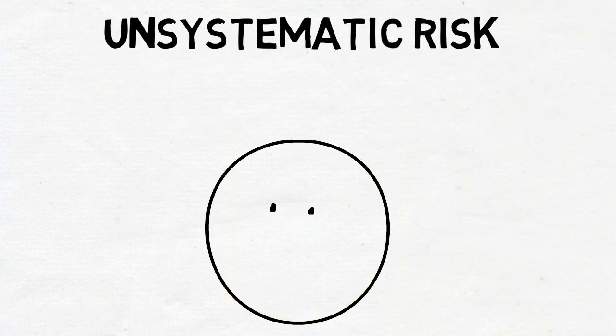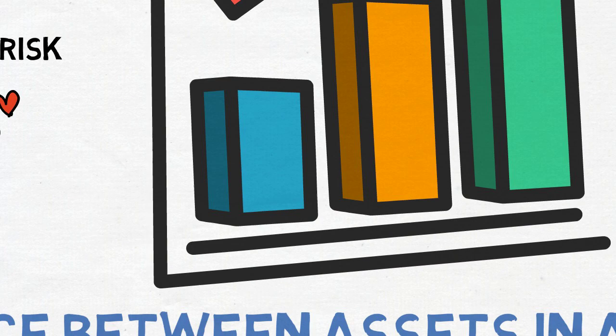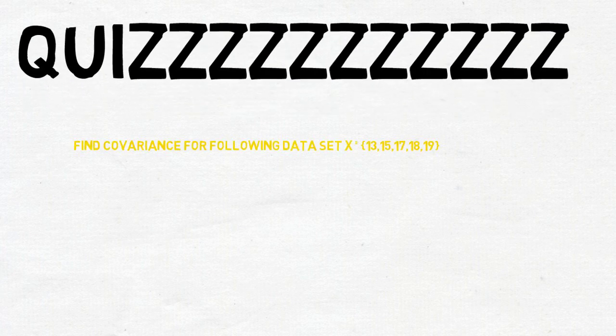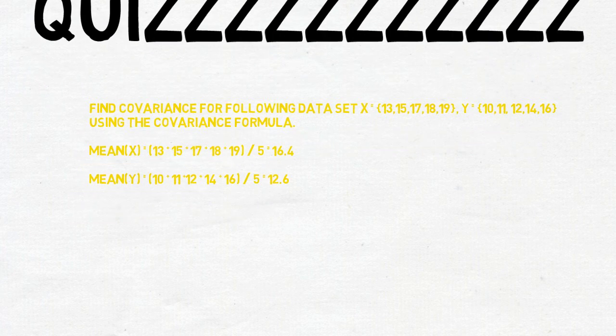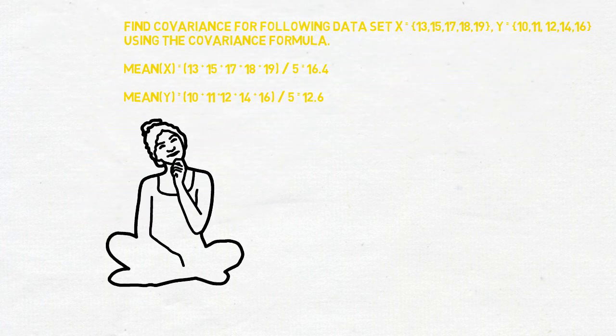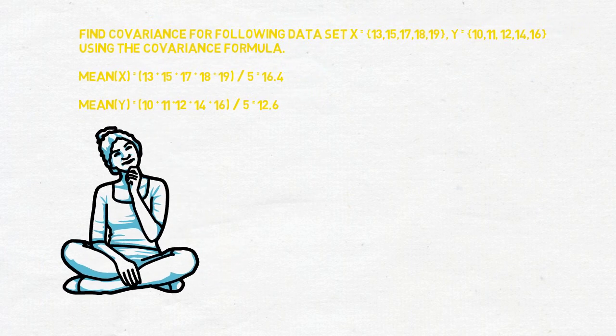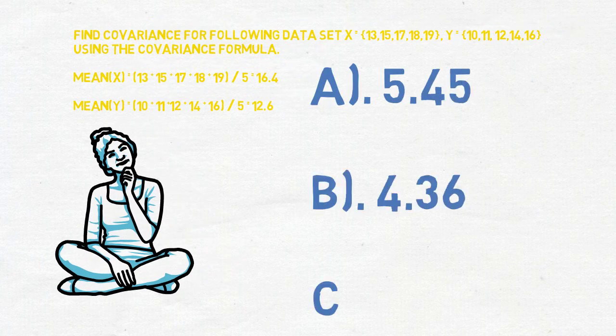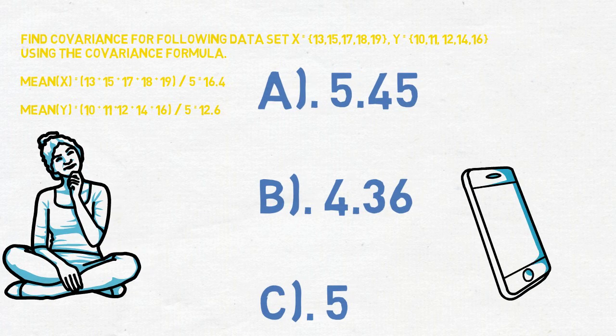I think now you got a clear idea about covariance. Now comes the quiz time. Find the sample covariance of the following data set. Option A, 5.45. Option B, 4.36. Option D, 5. Let me know the correct answer in the comment section.